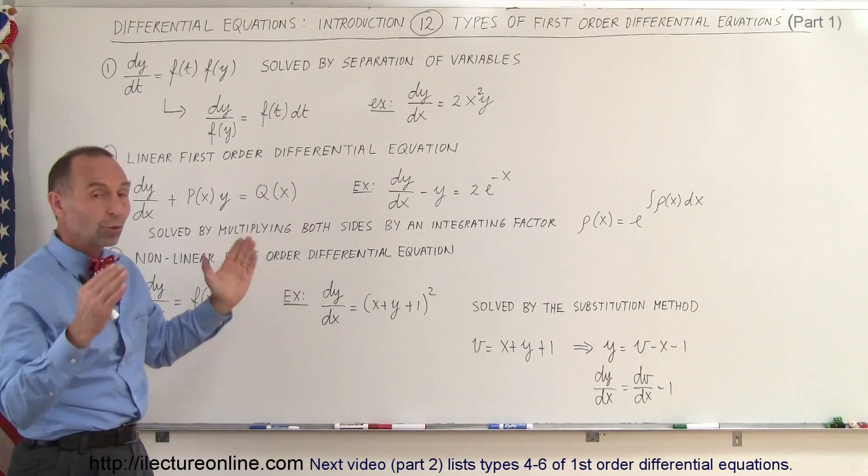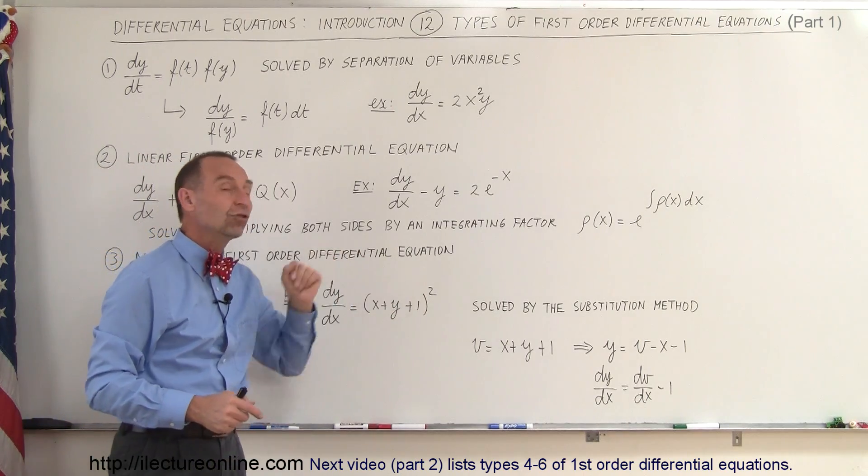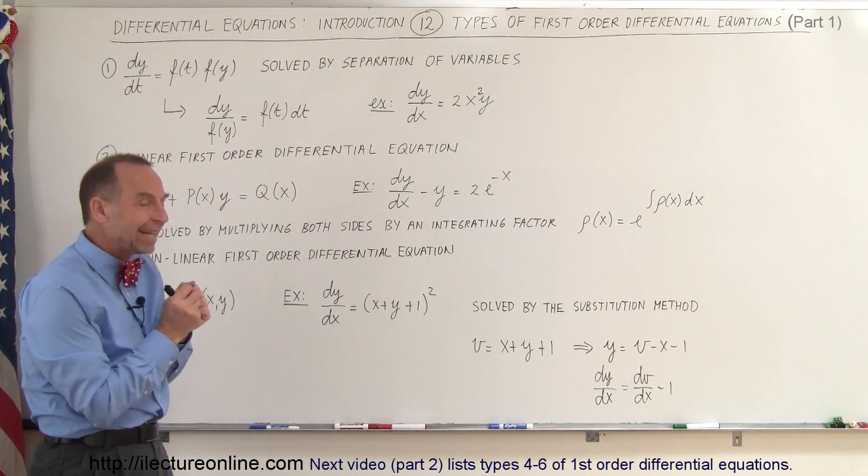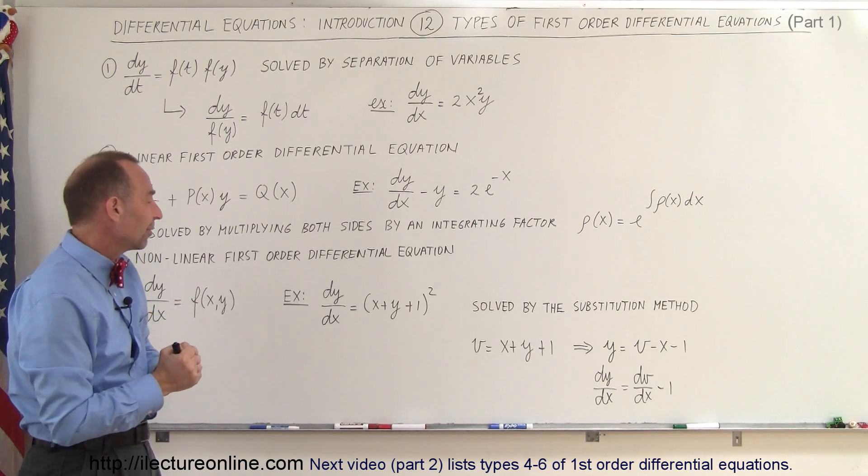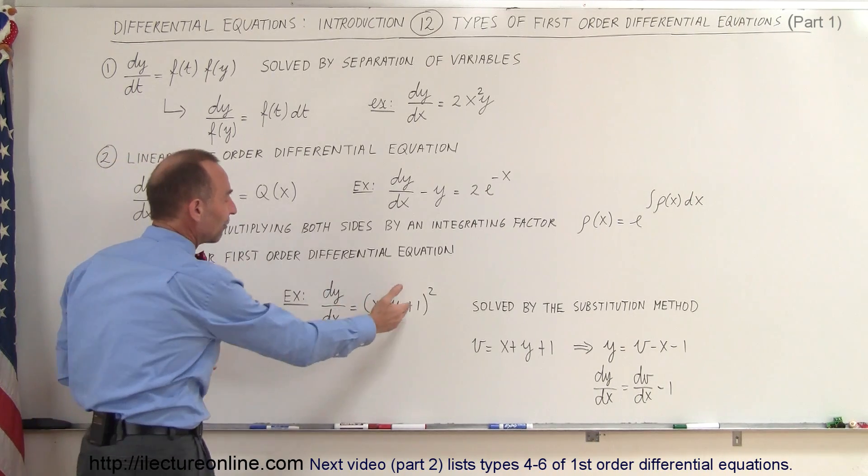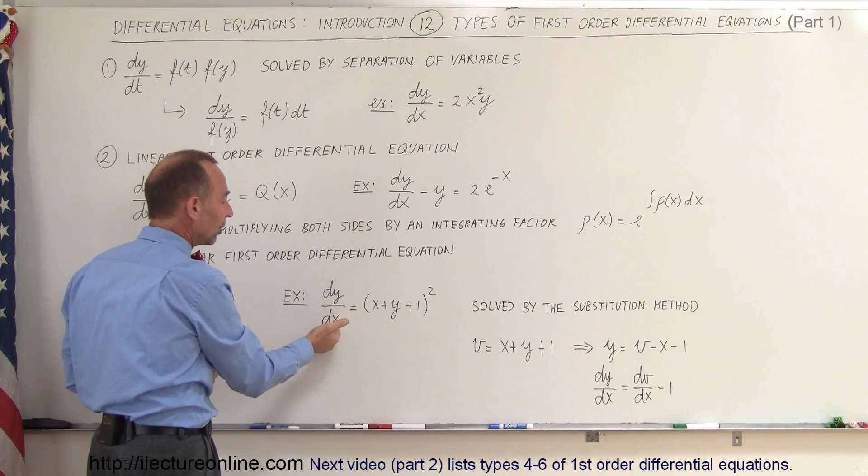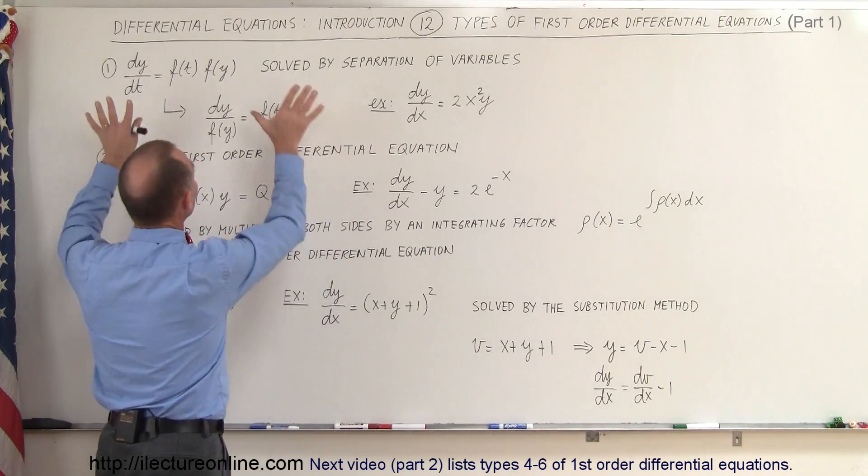So here's an example of that. dy/dx is equal to the quantity (x plus y plus 1) quantity squared. And notice you cannot separate the x and the y variables this way to move the y variable along with the dy and the x variable along with the dx. You cannot do here what we did over there.